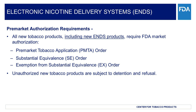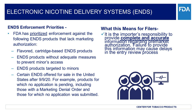At this time, FDA is focusing on enforcement of the requirements of Section 910 as to finished tobacco products. A finished tobacco product refers to a tobacco product, including all components and parts, sealed in final packaging, intended for consumer use. ENDS products remain a high priority for FDA enforcement. In response to the epidemic levels of youth use of e-cigarettes and the popularity of certain products among children, the FDA has prioritized enforcement against the following types of ENDS products that lack marketing authorization: flavored cartridge-based ENDS other than tobacco or menthol, ENDS without adequate measures to prevent minors' access, ENDS targeted to minors, and certain ENDS offered for sale in the United States after September 9, 2020.